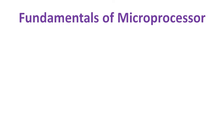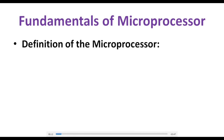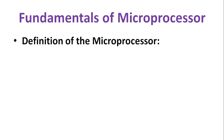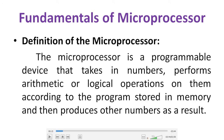First, what is the definition of a microprocessor? The name itself tells us: 'micro' relates to the speed of operation, and 'processor' is a sequential or combinational circuit that performs different arithmetic and logical operations. The microprocessor is a programmable device that takes in numbers, performs arithmetic and logical operations on them according to the program stored in memory, and then produces other numbers as a result.